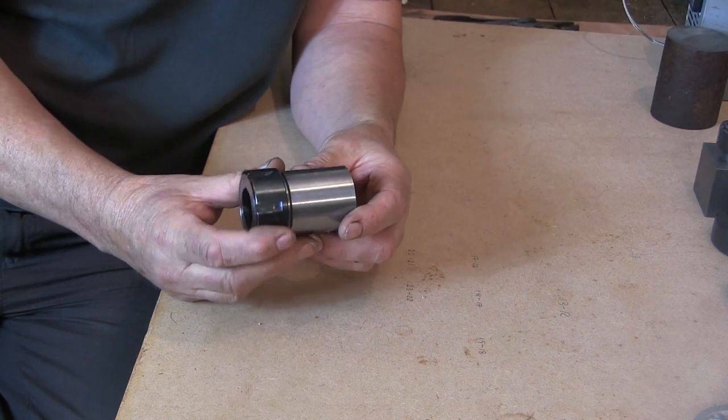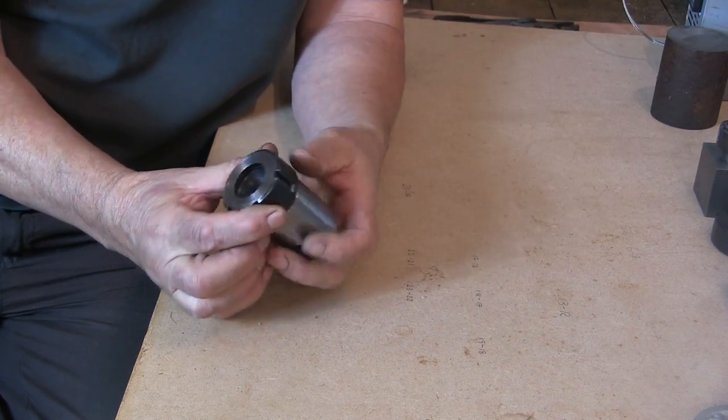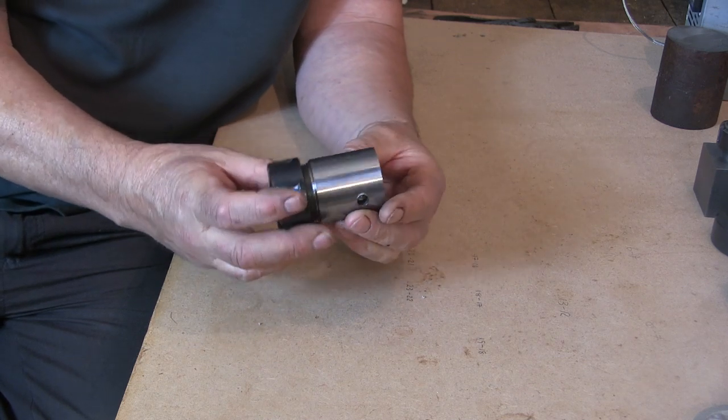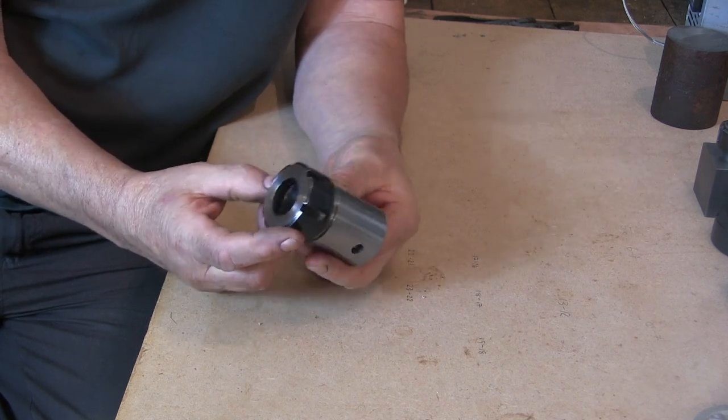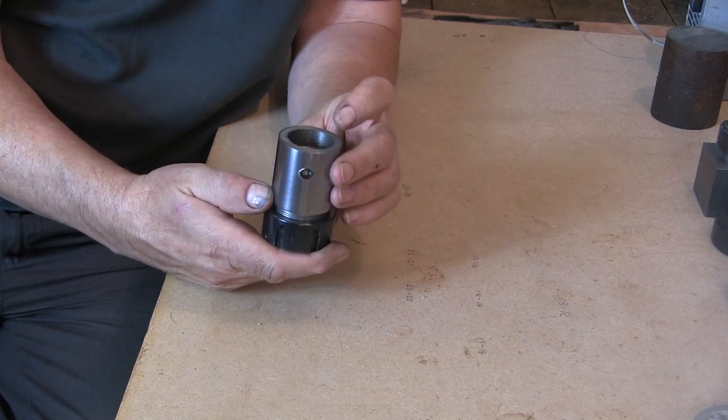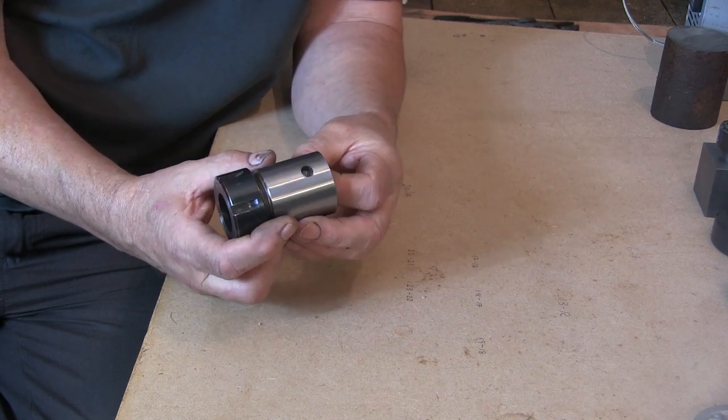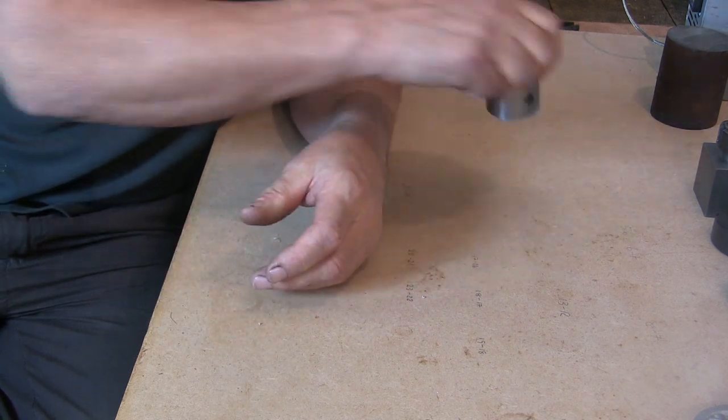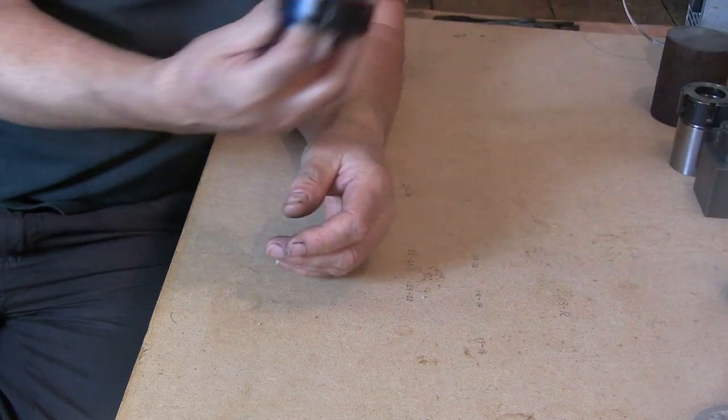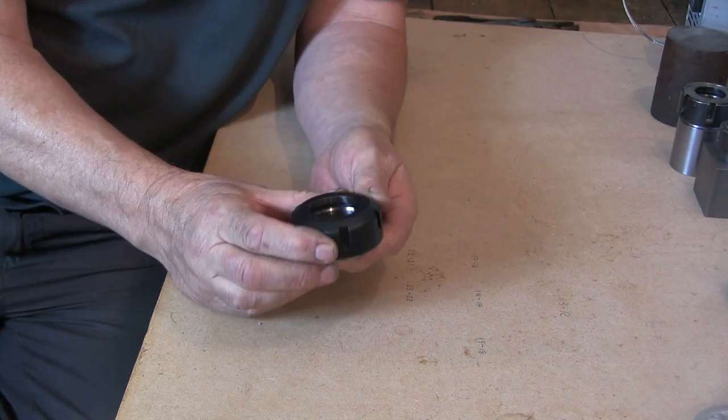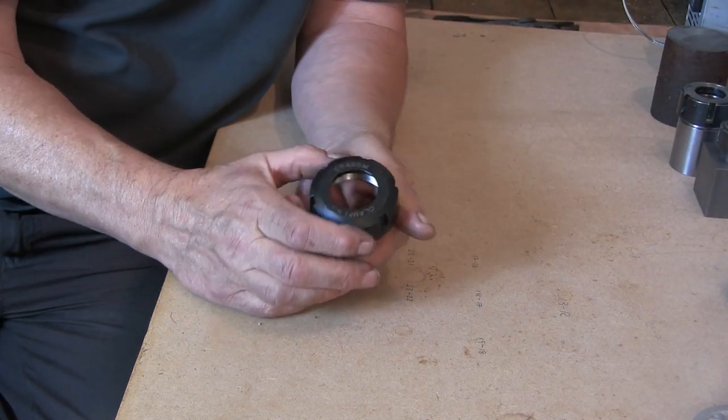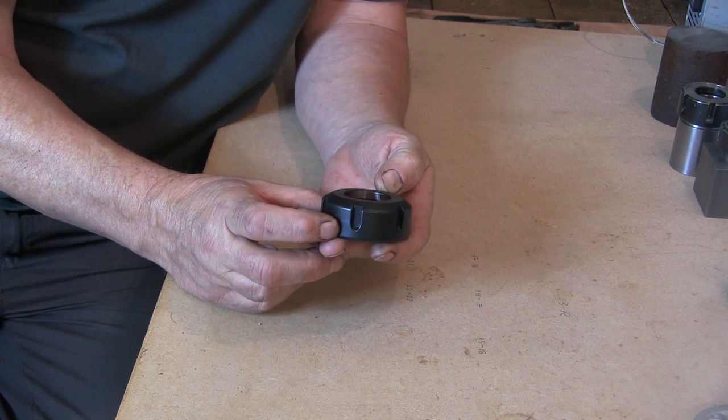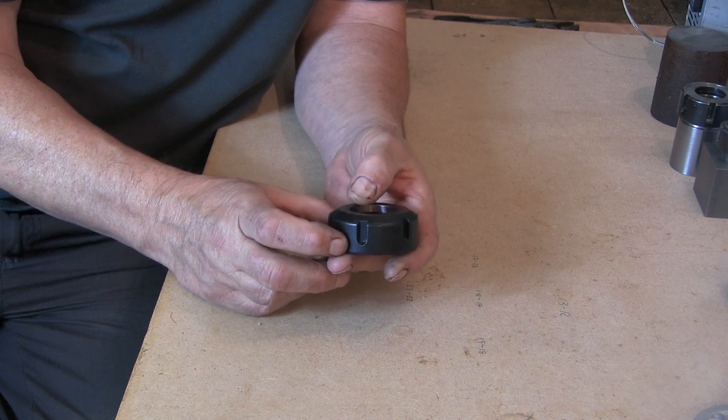Now some time ago I made this. This is an ER32 just to prove I can do an ER32 thread, but this is an ER32 collet chuck which goes on to me ML7. And this is an ER40 clamping nut and that's me next project, to make an ER40 collet chuck for the lathe.